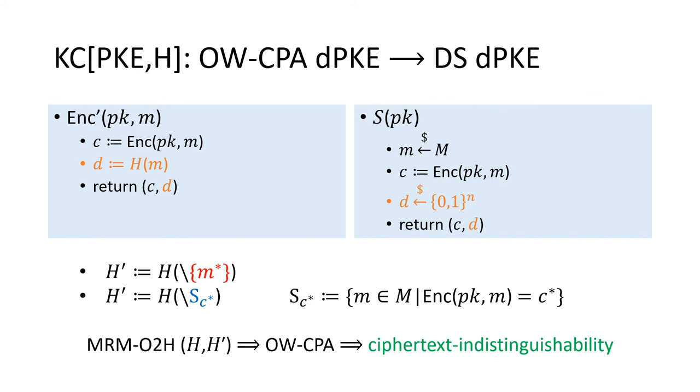Now, we try to prove the ciphertext indistinguishability. In the encryption algorithm of KC, a hash of message is added to the ciphertext. But the simulator S chooses a random value in the D part.